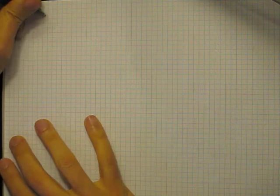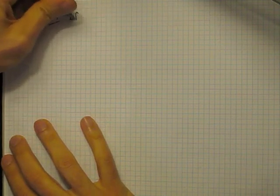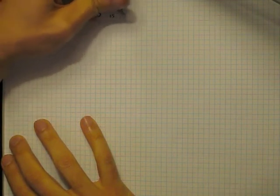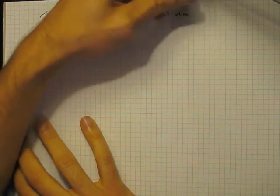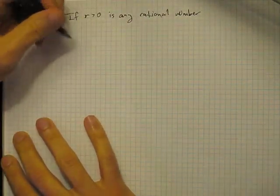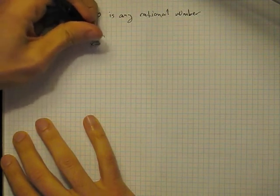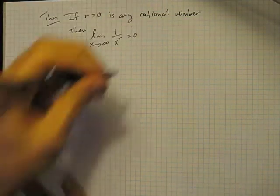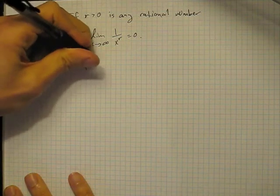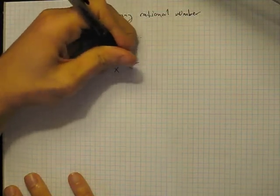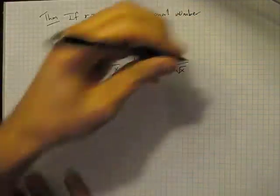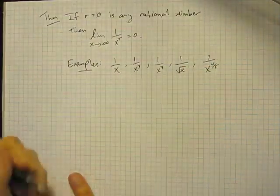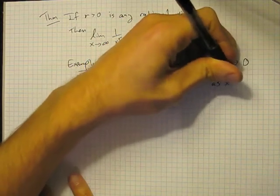So here's a theorem: if r is any positive rational number — like an integer, or a half, or a third, or three-fourths — then the limit as x goes to infinity of 1 over x to the r is equal to zero. Examples of this that we might see: 1 over x, 1 over x cubed, 1 over x to the seventh, 1 over the square root of x, 1 over x to the four-fifths. These all go to zero as x goes to infinity.